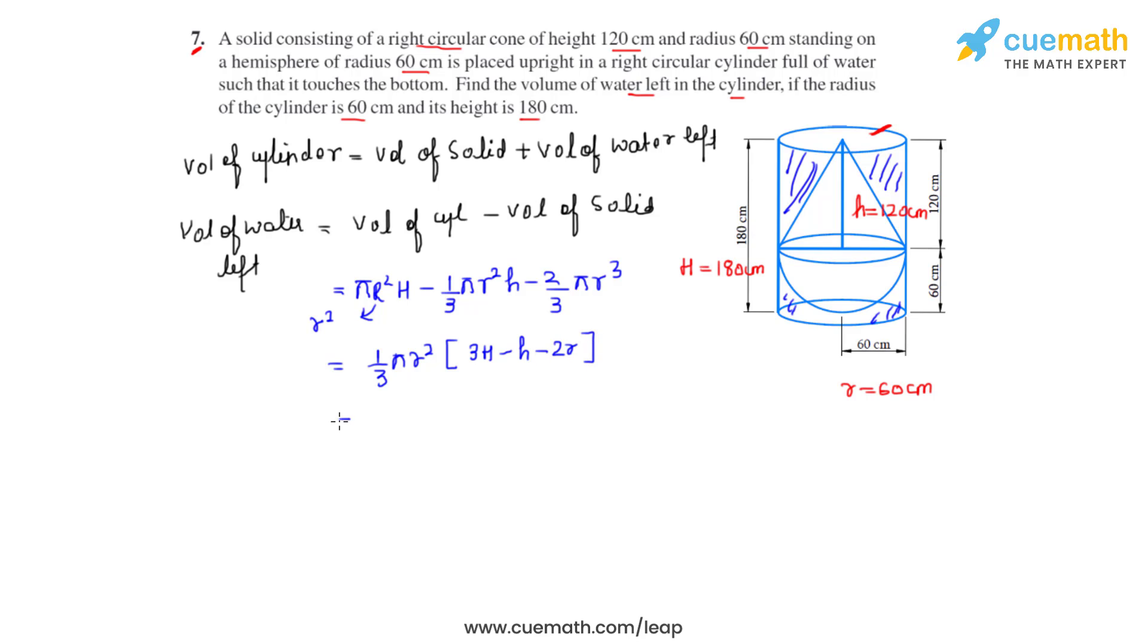Now let's substitute the values. We get that as 1/3 times 22/7 times 60 times 60. Inside the brackets we have 3 times capital H that is 3 times 180 which will be 540 minus small h which is 120 minus 2r that is 2 times 60 so 120.